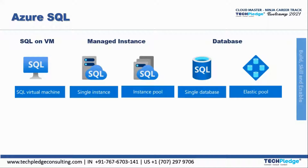Other than that, within the database category, we have two options available: one is single database and another one is elastic pool. Single database, as I have mentioned, is a database that we manage wholly. And then there is elastic pool, which basically helps us with scaling the database.